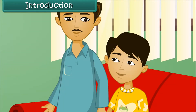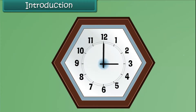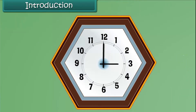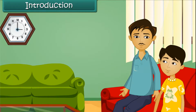Can you also comment on the shape of the clock, Vijay? Sure. The clock has six sides and it's a hexagon. Wonderful, Vijay. You have learnt your geometry well.